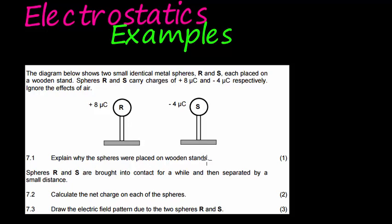Metal spheres R and S are brought into contact for a while and then separated by a small distance. So these two have opposite charges, and now they touched, they're in contact for a little while, and then they're separated a small distance. Calculate the net charge on each of the spheres.